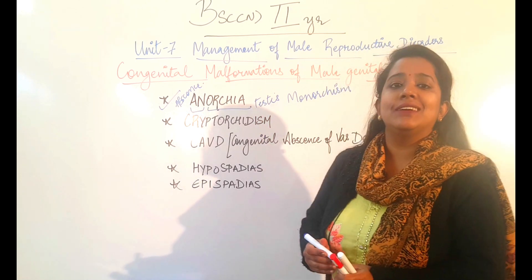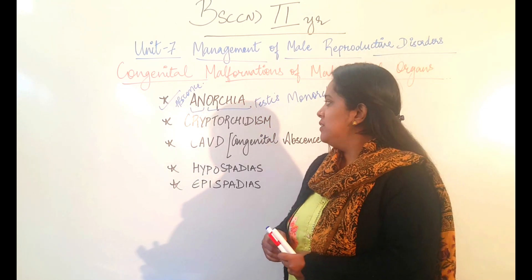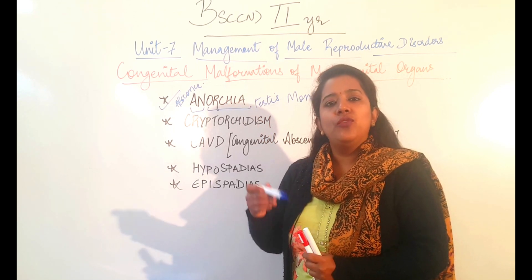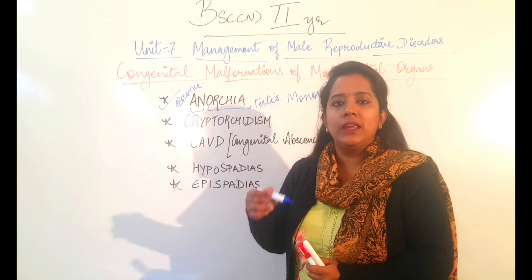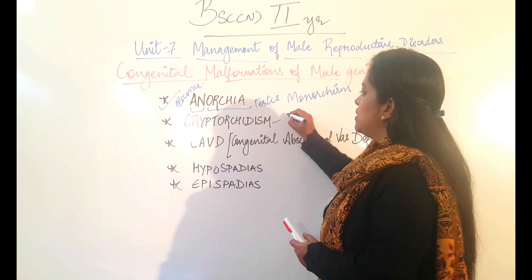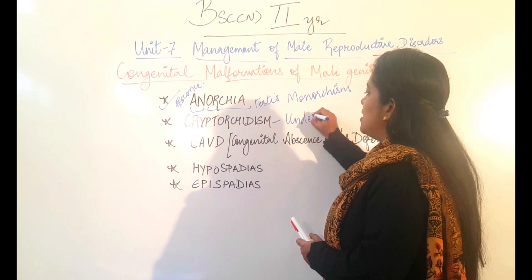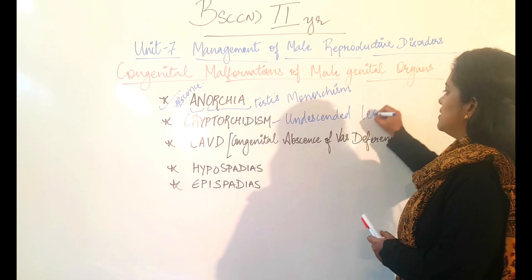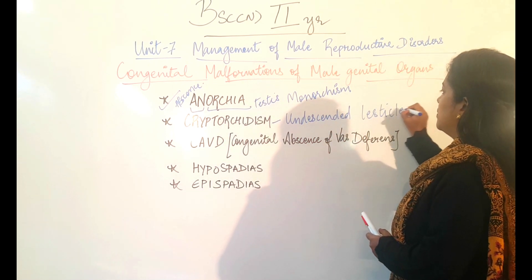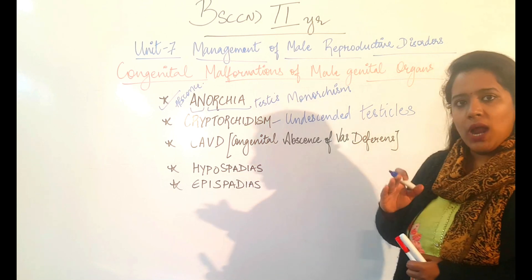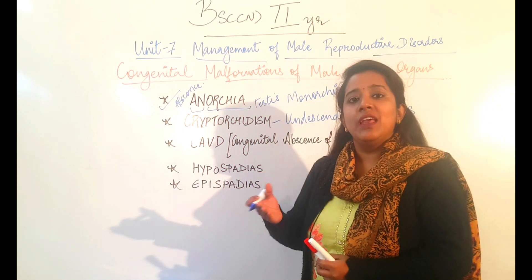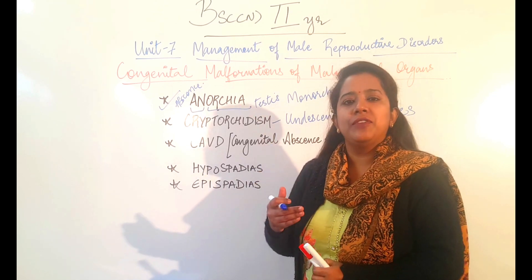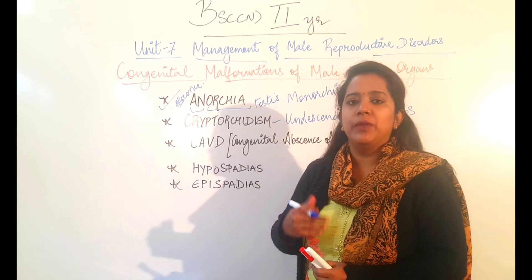The second disorder is Cryptorchidism. Cryptorchidism is a condition when the testes fail to descend into the scrotum. This condition is also called undescended testicles. When one or both testes fail to descend down to the scrotum, that type of condition is called Cryptorchidism.